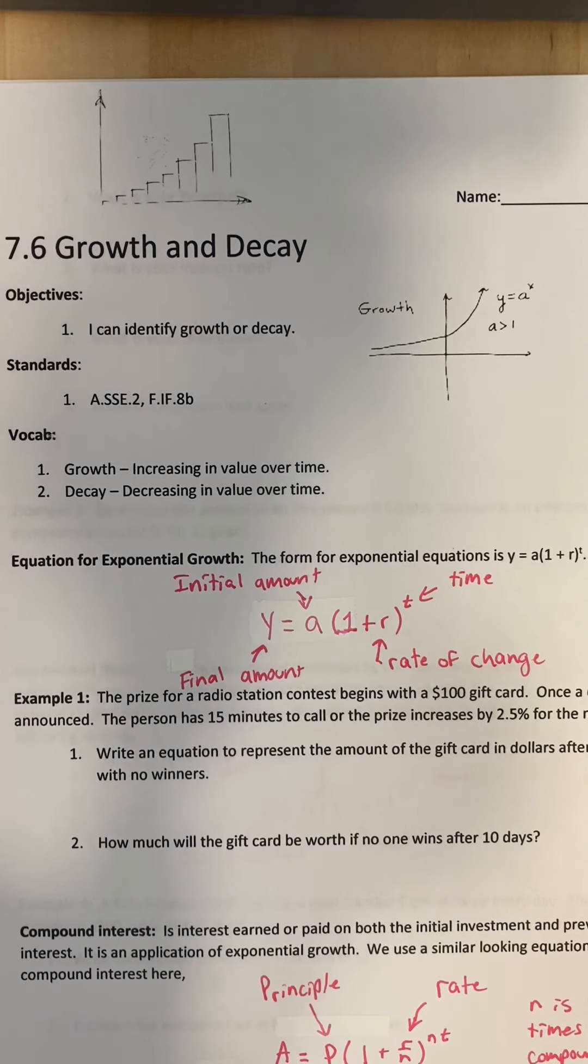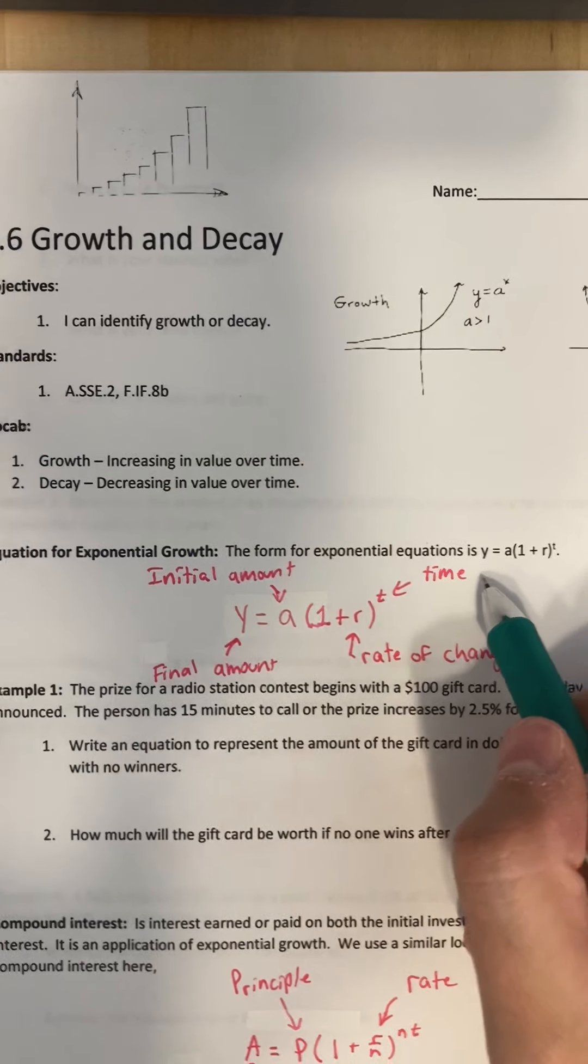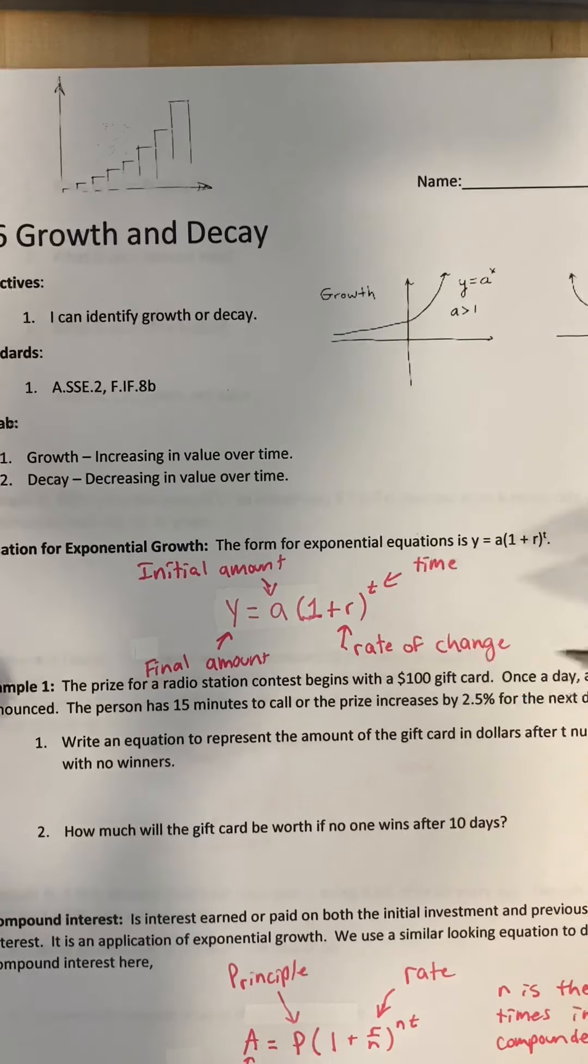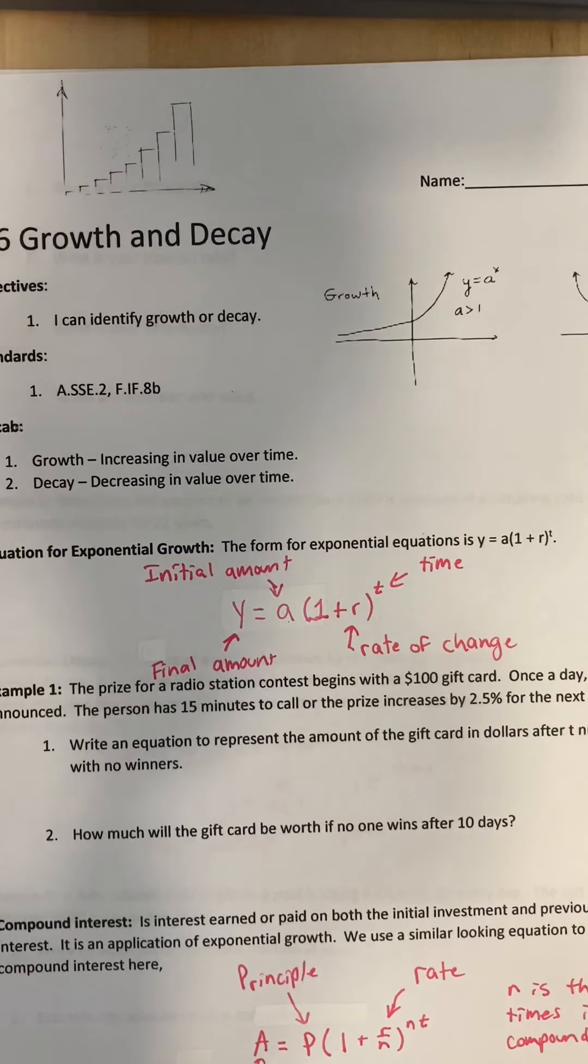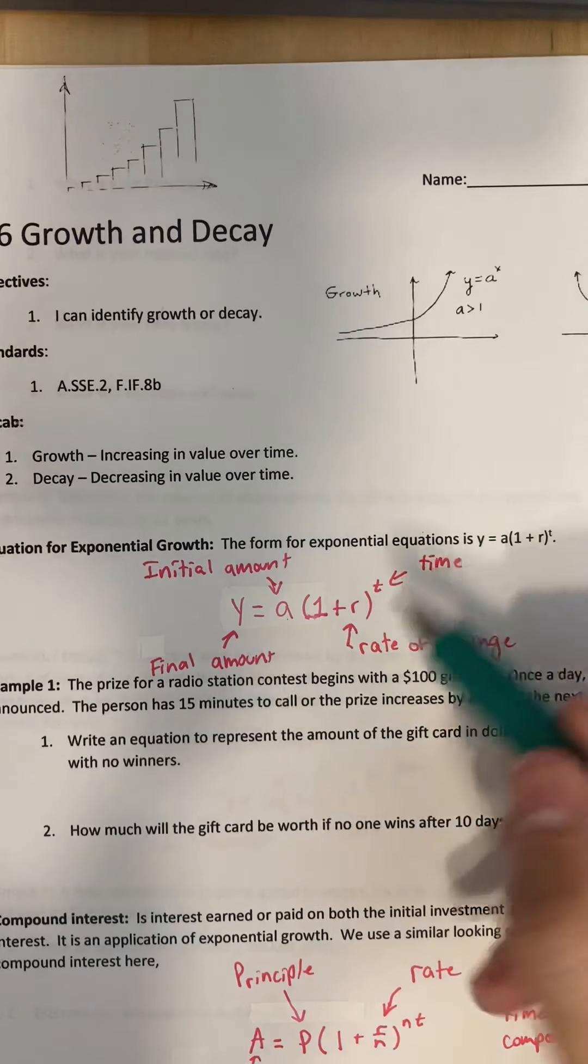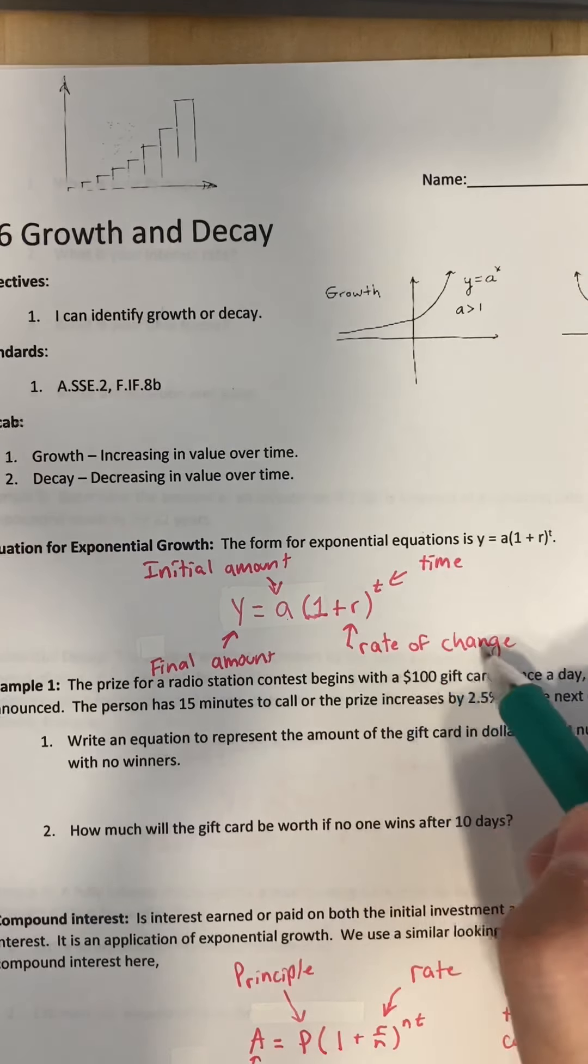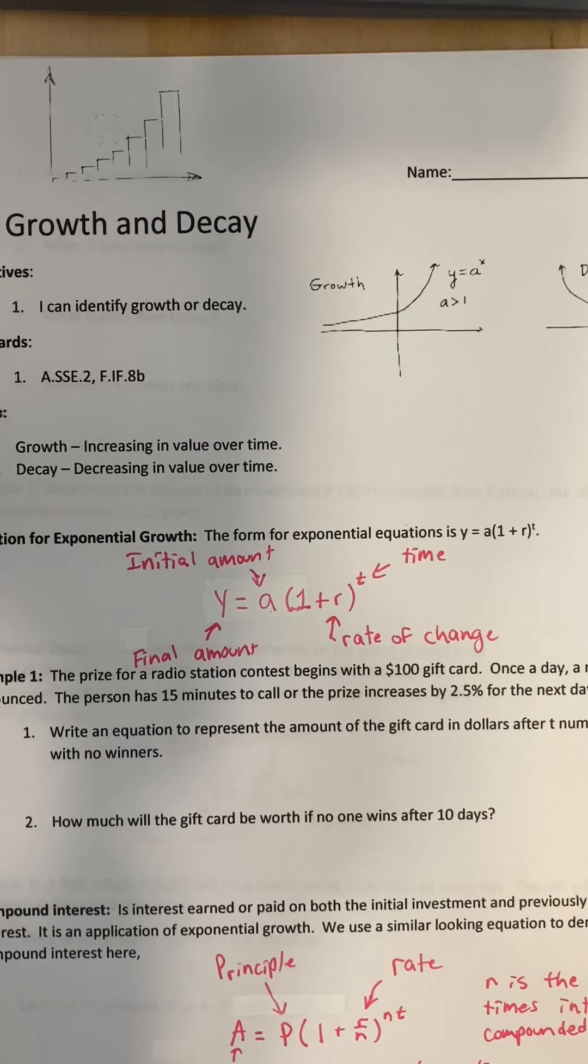Let's take a look at some real world examples. An equation for exponential growth says the form of the exponential equation is y equals a times one plus r to the t. Let's break it down. A is going to be your initial amount. R is going to be your rate of change, typically a percent or a decimal. T is going to be time, typically dealt in years but it doesn't have to be. And y here is going to be your final amount.